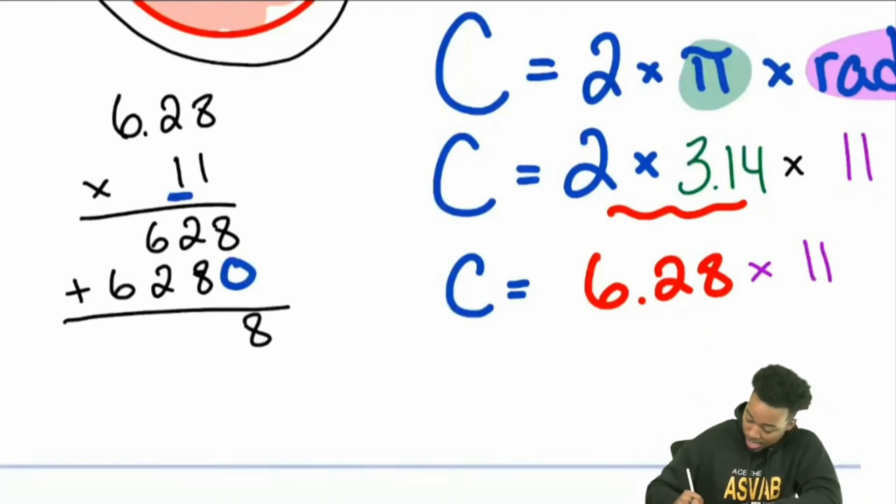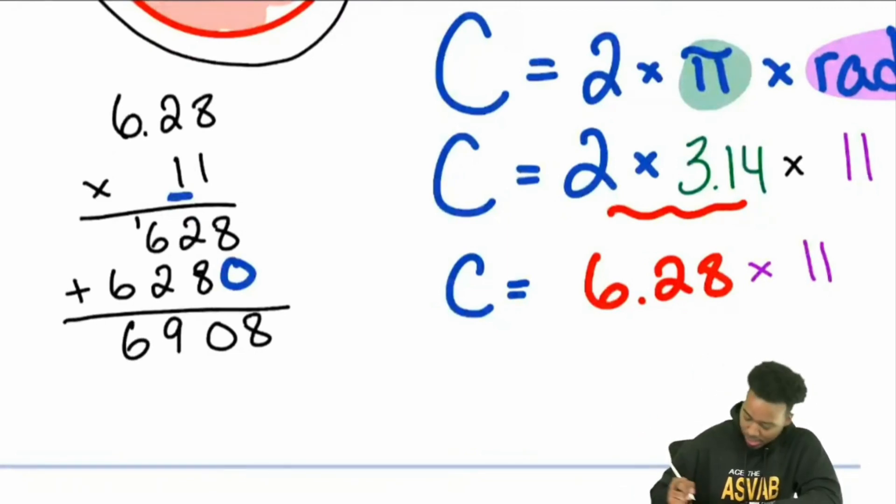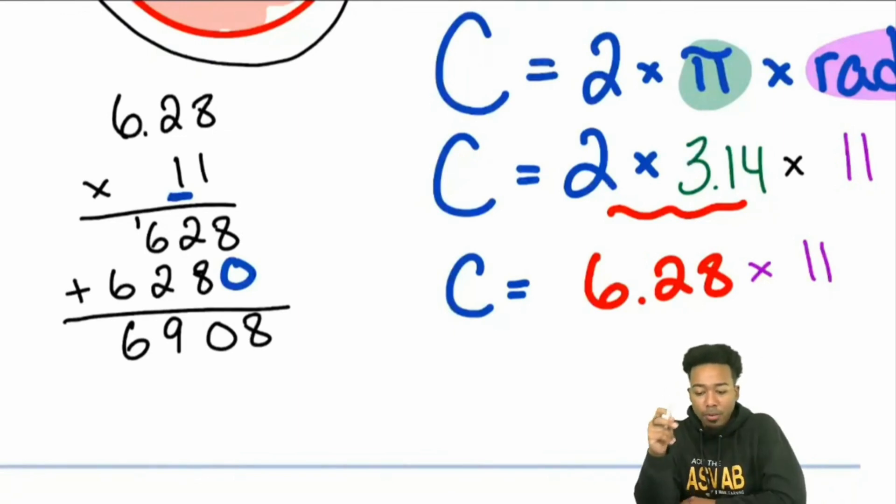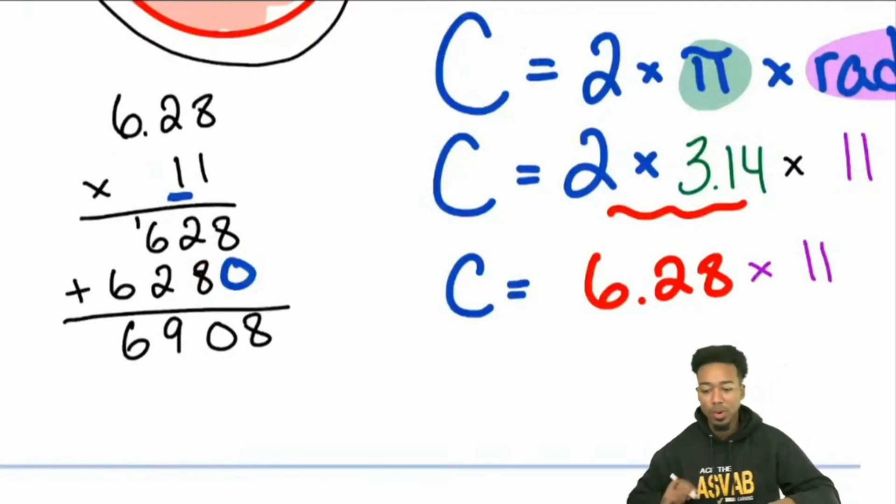Add it back together. We have 8. 2 plus 8 is 10. 6 plus 2 is 8. Plus the extra 1 is 9. And then we have the 6 still there. Boom. Now with that, Andrew, the reason we put the 0 there is because we're going to the next place value. So this line here was dedicated to this one here. This line here is dedicated to this one. This one is in the tens place. So we put a 0 so we can start in the tens place. That's why that is.